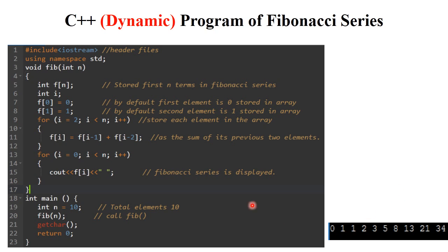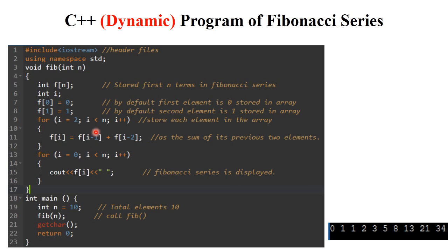When i equals 2: f[2-1] plus f[2-2] equals f[1] plus f[0] equals 1 plus 0 equals 1. When i equals 3: f[3-1] plus f[3-2] equals f[2] plus f[1] equals 1 plus 1 equals 2, then stored. When i equals 4: f[4-1] plus f[4-2] equals f[3] plus f[2] equals 2 plus 1 equals 3, and then 3 plus 2 equals 5. In this way subsequent elements are calculated and stored.